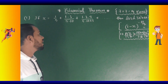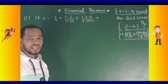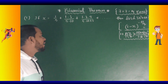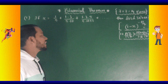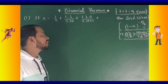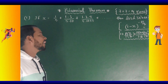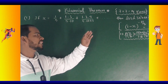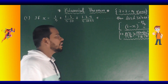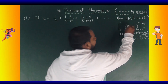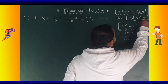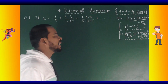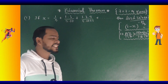X equals 1 by 5 plus 1 into 3 by 5 into 10 plus 1 into 3 into 5 by 5 into 10 into 15 plus up to so on. Then find 3x² plus 6x.